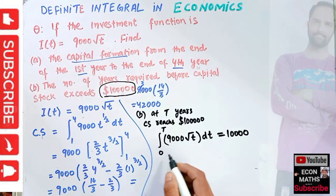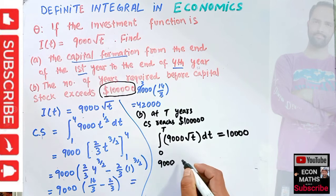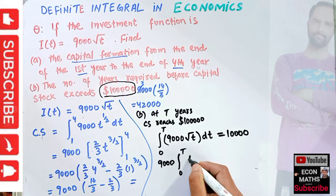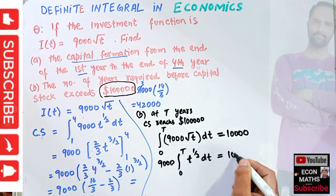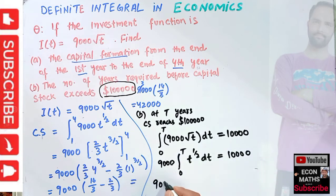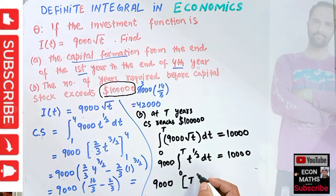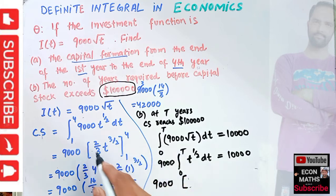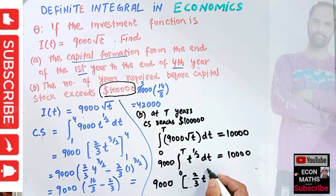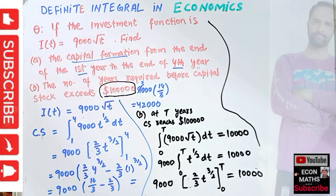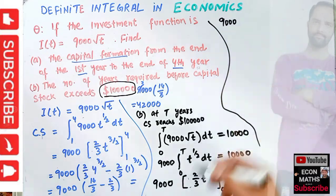Setting up the equation: the integral from 0 to T of 9000 times t^(1/2) dt should equal one lakh dollars. We have 9000 times the integral from 0 to T of t^(1/2) dt. Taking the integral, this becomes 9000 times [2/3 × T^(3/2)] evaluated from 0 to T, which should equal one lakh dollars.